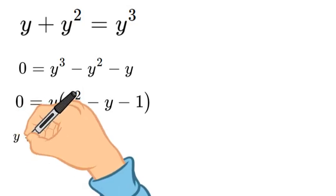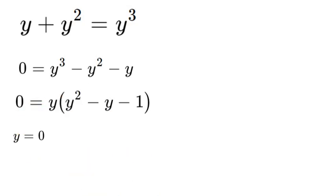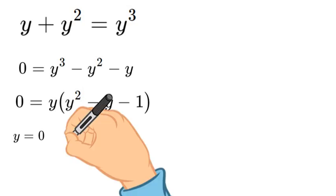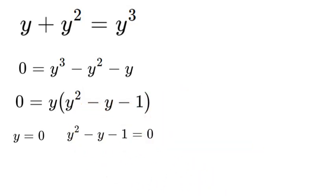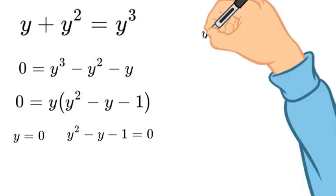So let's solve for both. If y is equal to 0, it's equal to 0, pretty straightforward. And if we have y squared minus y minus 1 equal to 0, we're going to have to use the quadratic equation to solve this.